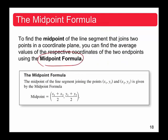We'll skip the proof here, but the midpoint of the line segment joining (x₁, y₁) and (x₂, y₂) is found by averaging the x-coordinates and averaging the y-coordinates. The midpoint formula gives: ((x₁ + x₂)/2, (y₁ + y₂)/2).